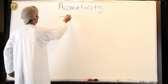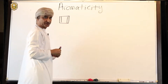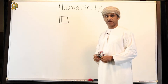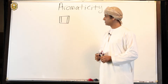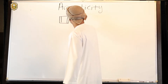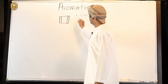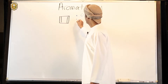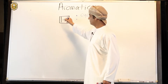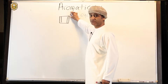If we take cyclobutadiene, it's a four-membered ring. If you look at this molecule, you would find out that it is cyclic — of course there's no question about that. Is it conjugated? Well, there is a P orbital obviously on each of these carbon atoms.